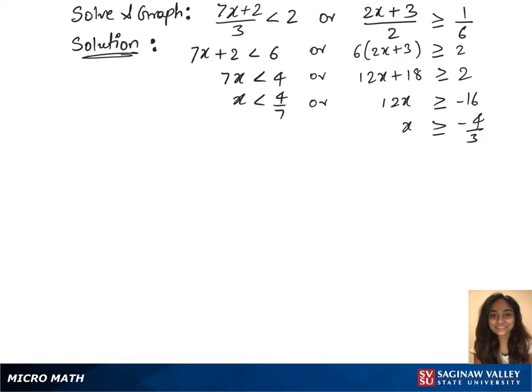And for our first inequality, we have the interval notation, which is minus infinity to 4 over 7. We'll plot this on the graph and look for 4 over 7 on the graph and mark it.